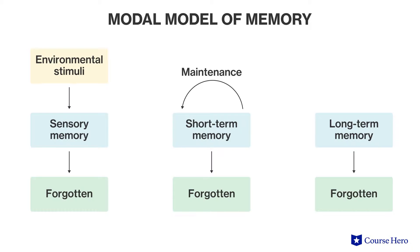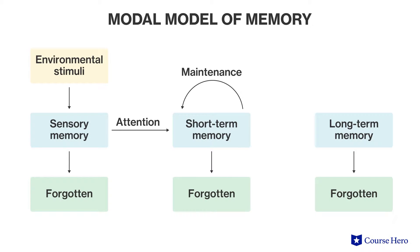Memory consists of three main systems: sensory memory, short-term memory, and long-term memory. According to the modal model of memory, information passes from sensory memory to short-term memory to long-term memory. But not everything that enters gets remembered, as information can be lost at any stage in the process unless strategies are used to maintain it.